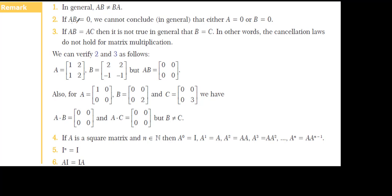If A times B is equal to zero, we cannot conclude that either A or B is equal to zero — this is not like real numbers. Similarly, if A times B equals A times C, it is not true that you can simplify the A's to conclude B equals C. We have to be careful about these rules; we cannot simplify in matrix multiplication.